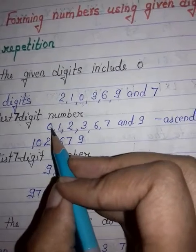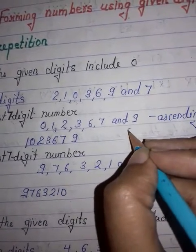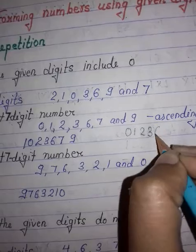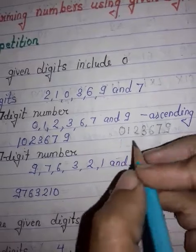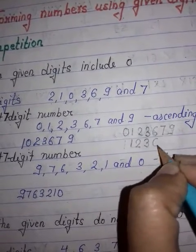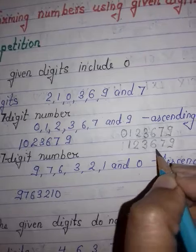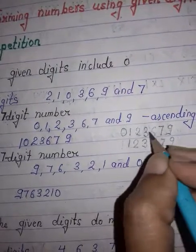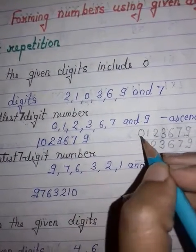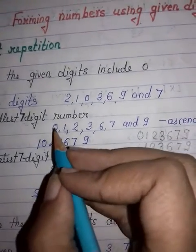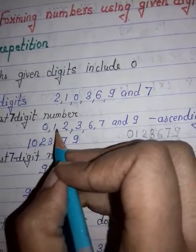Now, you cannot start your smallest number with a zero. If you do this, it will be 0, 1, 2, 3, 6, 7, and 9 — but this zero has no value. So your number simply becomes 1,23,679, which is only a six-digit number. But you have to form a seven-digit number, so you cannot start the number with a zero.